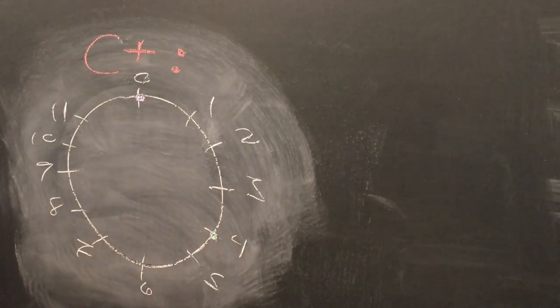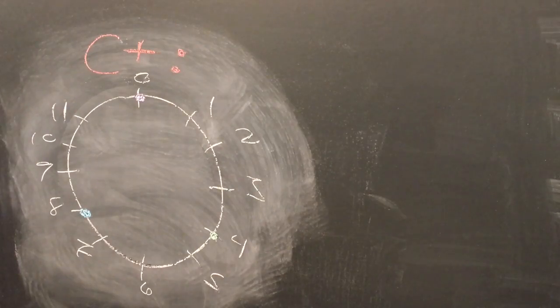For example, the C augmented triad has constituent pitch classes 0, 4, and 8, which create a perfect equilateral triangle around the pitch class circle. As we move to the edges of the outer prism, we get the least evenly spaced note class.